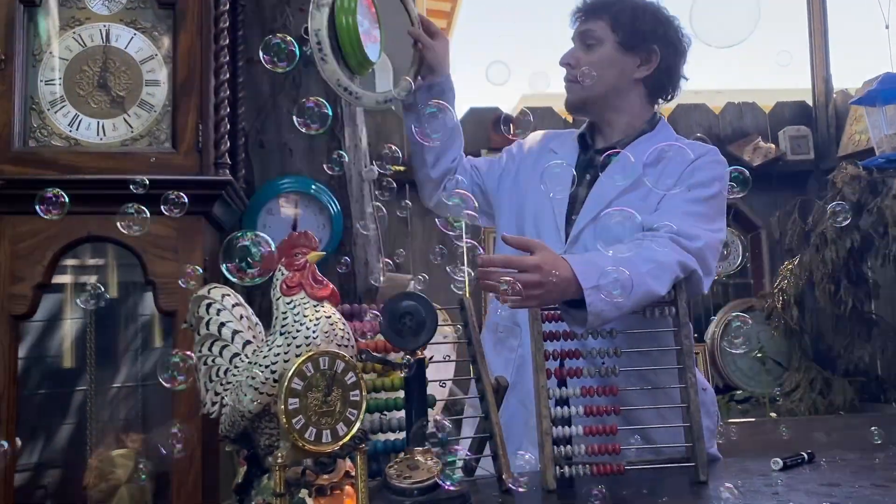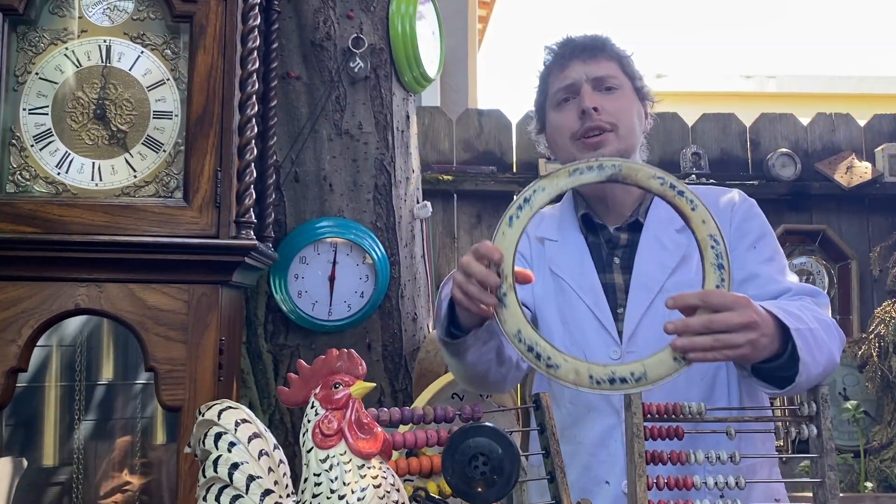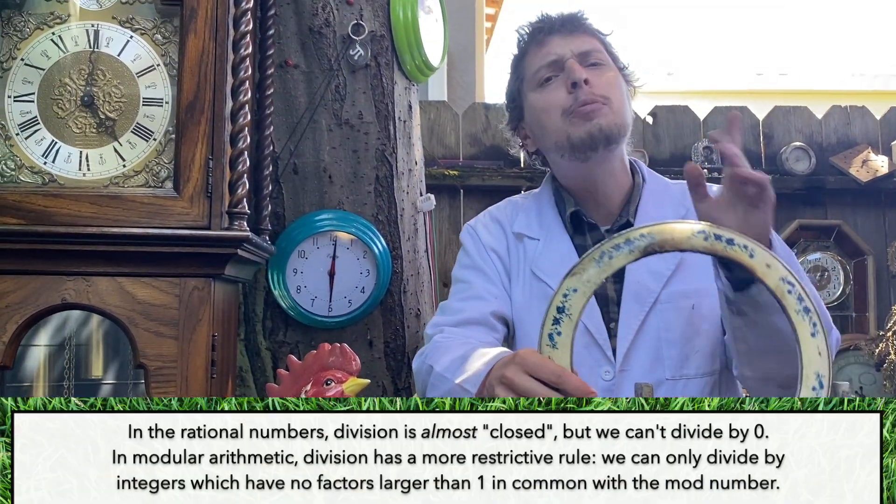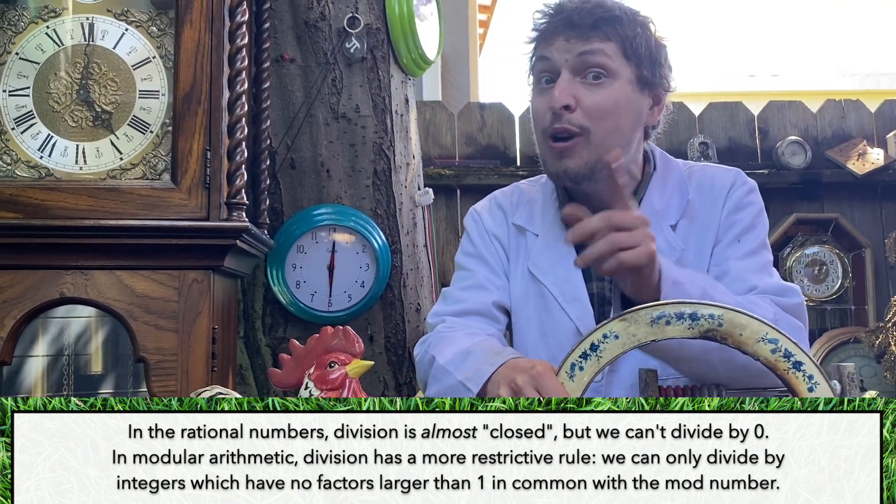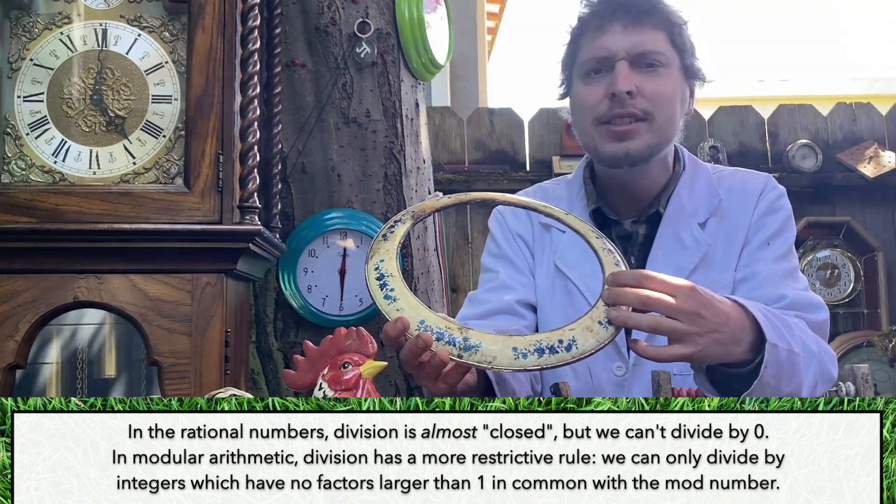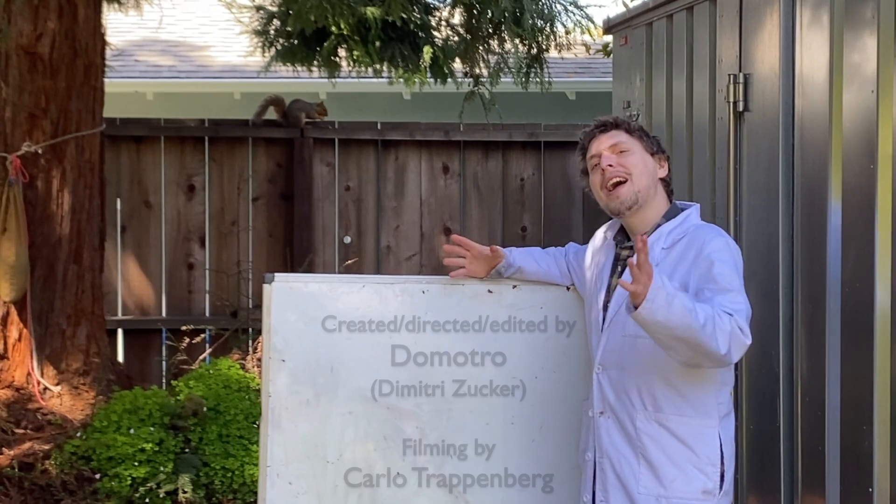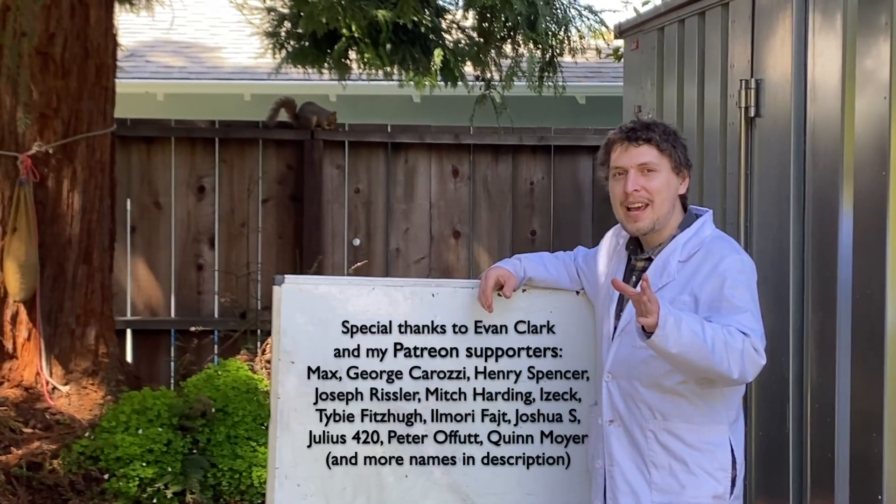Although modular division breaks many of the rules that you're used to division following, if you play by its rules and only ever divide by something co-prime to the mod number, then it is a fully consistent system. And that's all for now. Thanks for joining me here today, and I'll see you next episode.